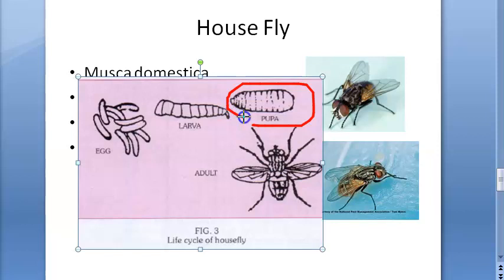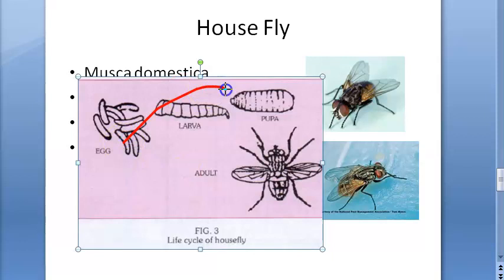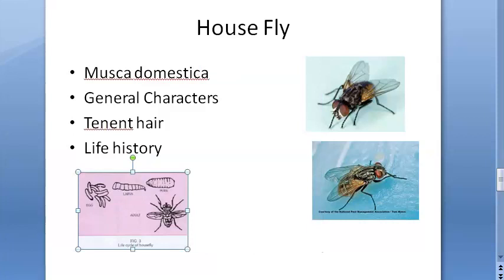The larvae then pupate, migrating to dry outer regions. The pupa are dark brown and barrel-shaped, measuring about a quarter of an inch. The pupal stage lasts three to six days. The complete life cycle from egg to adult takes about five to six days. Adult flies live for only 15 days in summer, but longer in winter.